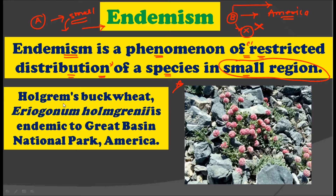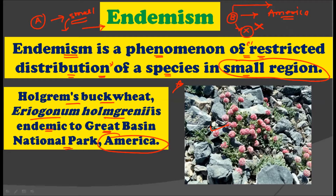An example of an endemic species is Holmgren's buckwheat, that is Eriogonum holmgrenii, which is endemic to the Great Basin National Park of America. In the photograph you can see the buckwheat plant, and it is strictly restricted to the Great Basin National Park of America — meaning this plant is not found in any other region beside the Great Basin National Park.